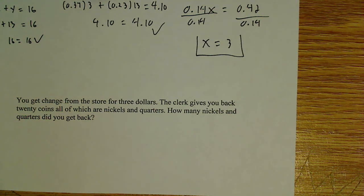All right, let's do another one here. So you get change from the store for three dollars. The clerk gives you back 20 coins, all of which are nickels and quarters. How many nickels and quarters did you get back?